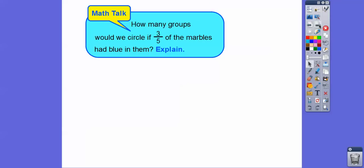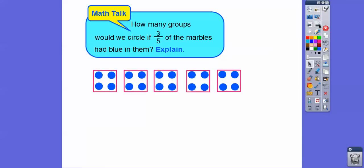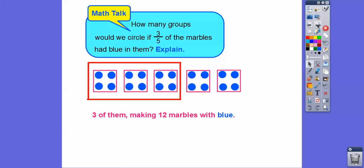Well, how many groups would we circle if three-fifths of the marbles had blue in them? Well, here's our counters again right here. Here's one-fifth, two-fifths, here's three-fifths. So we'd circle these three groups right here. And so if we circled three groups, that would be 12 of them with blue in it. So here's four plus four is eight, plus four is 12. If they asked for two-fifths, well, here's two-fifths right here. There would be eight. You get the idea?